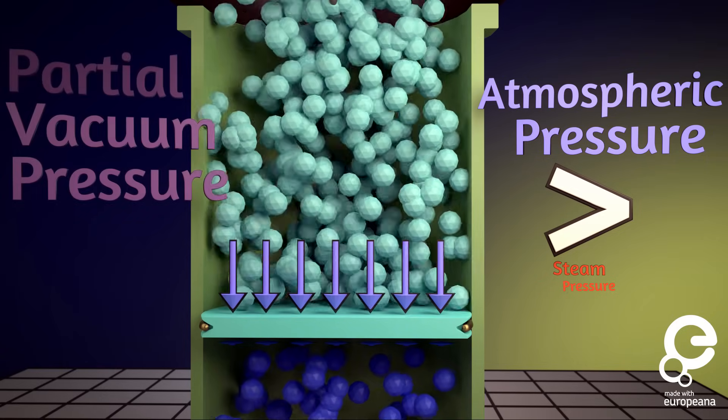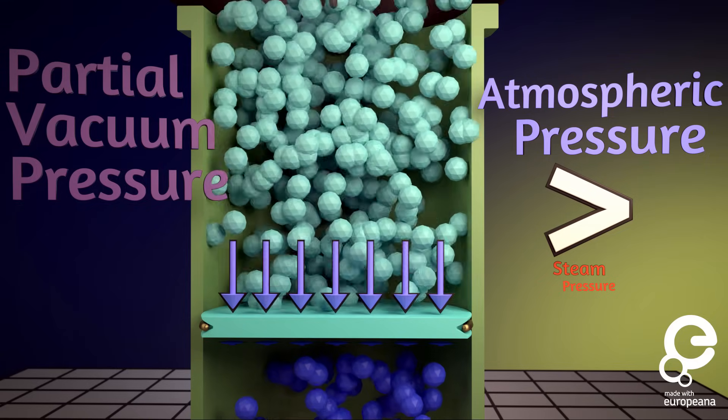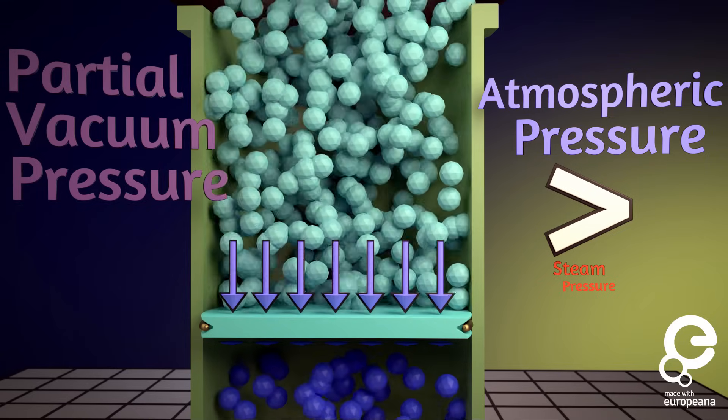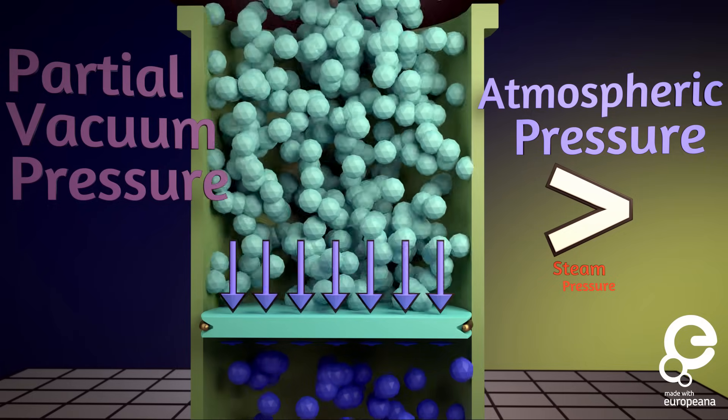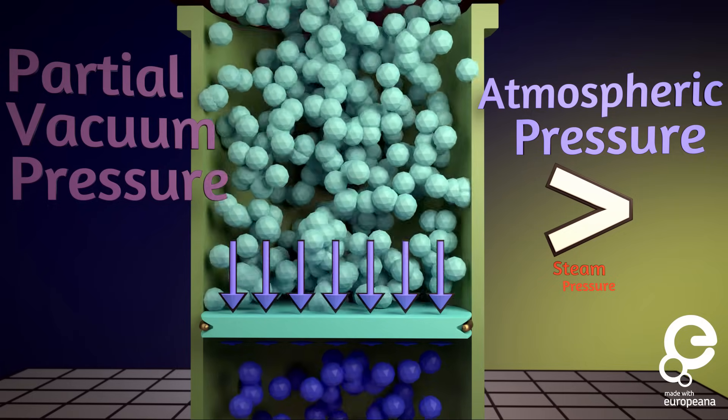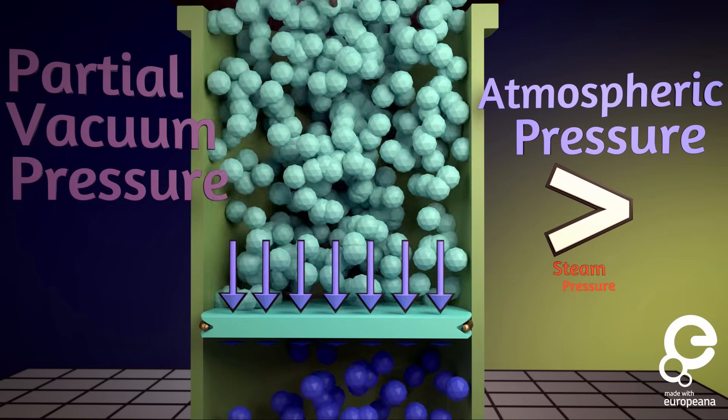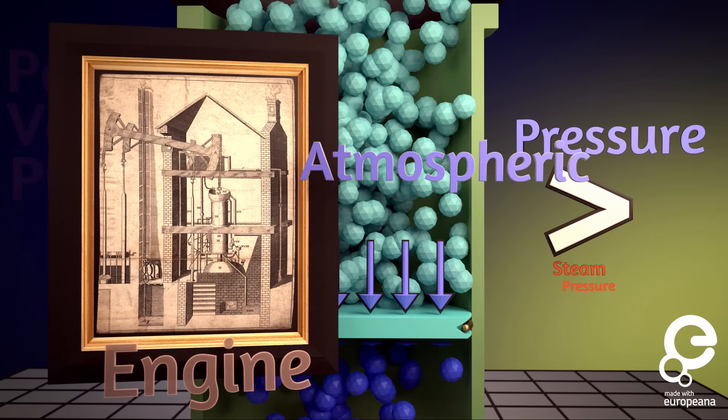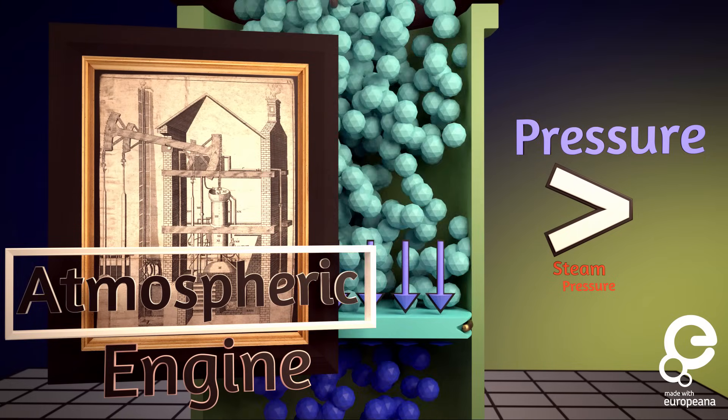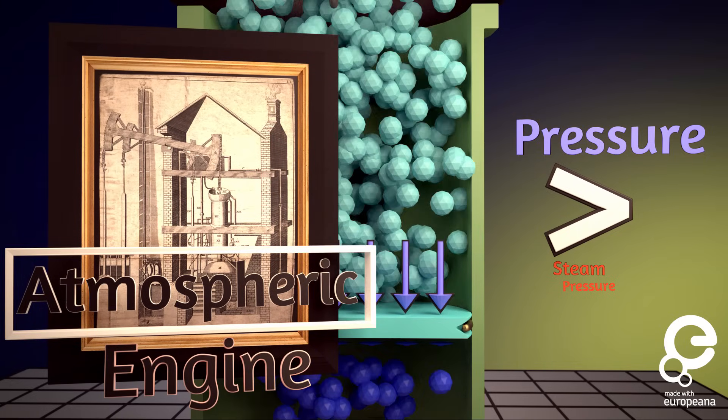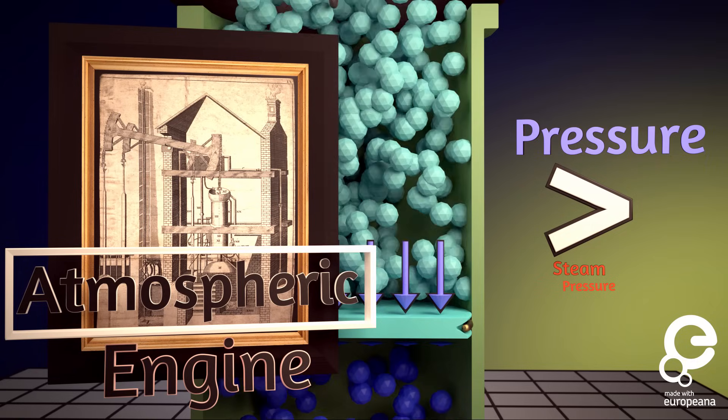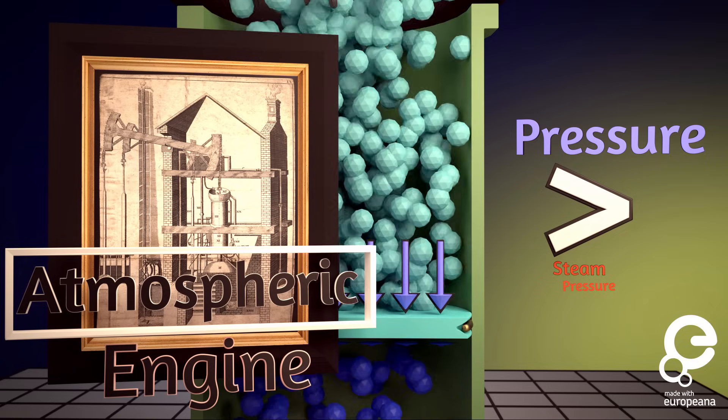Though technically, this is a partial vacuum because the cylinder wasn't fully empty of steam. But regardless, this imbalance between atmospheric pressure and the vacuum is where the force to move the piston and pump is generated. In addition, this is why Newcomen's engine is called an atmospheric engine. It uses the atmosphere to drive it on the power stroke, and the maximum steam pressure in the cylinder never significantly surpasses atmospheric pressure.